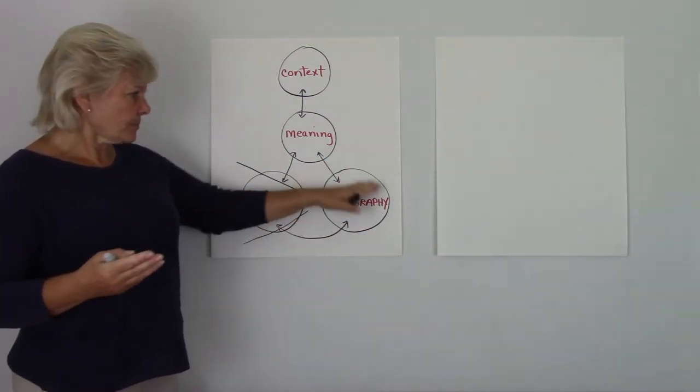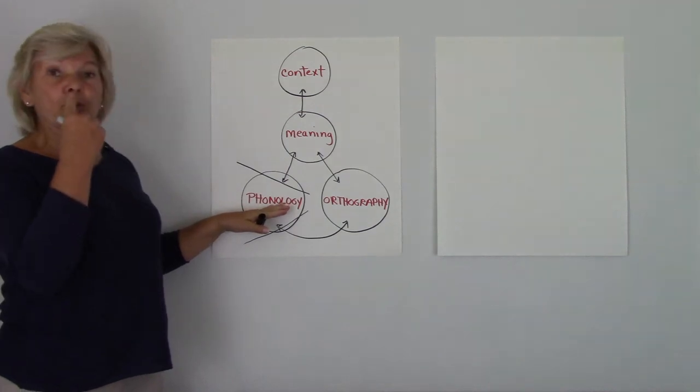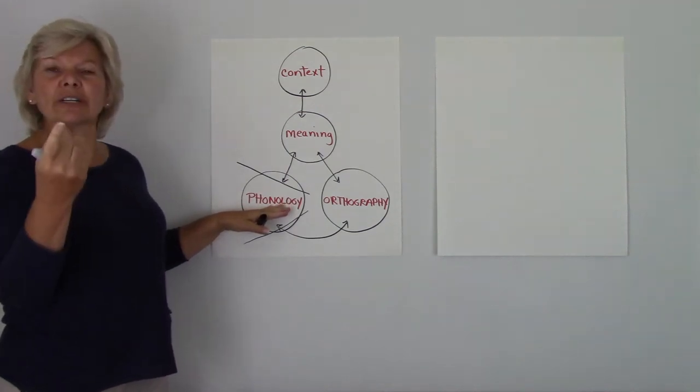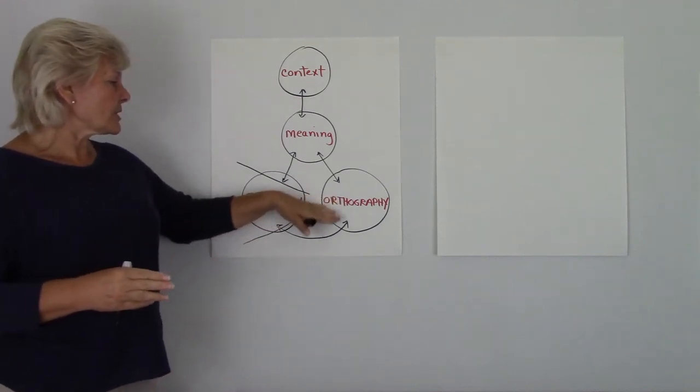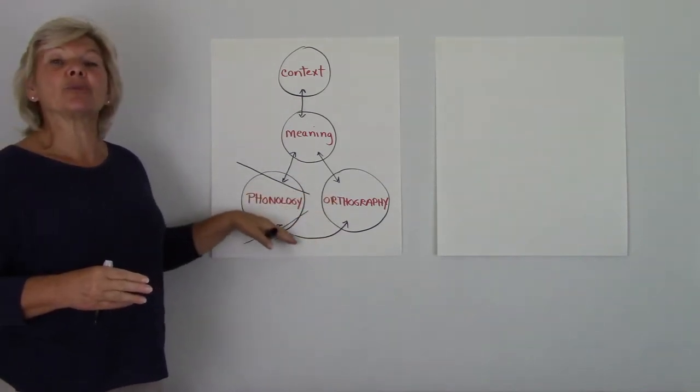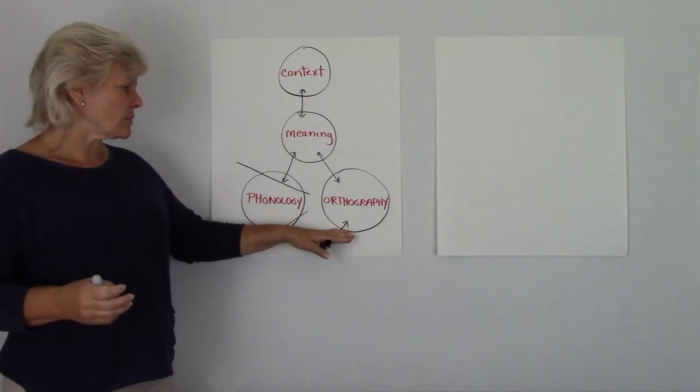So if we have M and we understand that we put our lips together and blow air out of our nose and say mmm and those are related with each other, we can of course then understand this alphabetic principle. That's where most people talk about this as being phonics.